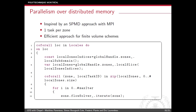In CHAMPS, this is done in two steps. We have a first coforall loop that creates one task per locale, and then every task creates additional tasks for the number of zones stored locally on that locale. In the end, we have one task per zone, and each task enters the main iterative loop where all computation is performed.